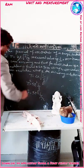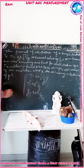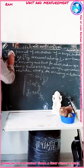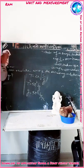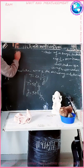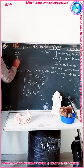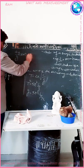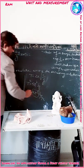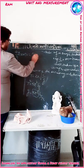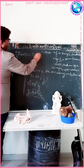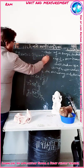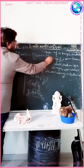Now we will write the error in g. Delta G upon G into 100 percentage is equal to delta L upon L into 100 plus 2 delta T upon T into 100.